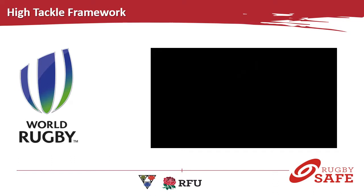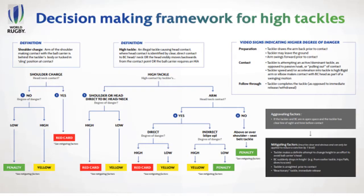The first thing is to look and see: is it a shoulder charge or is it a high tackle? Then you can follow through all the other questions you need to ask, and whether there's a high degree of danger. This PDF on the decision-making framework for high tackles will come out to everybody so you'll be able to see it much more clearly. Please keep a copy with you and revisit it every so often. As always, if you have any questions please feel free to get in touch - you can see us at one of the training sessions or email nldreftraining@gmail.com.